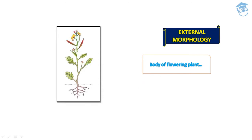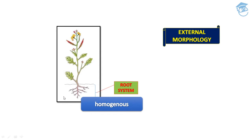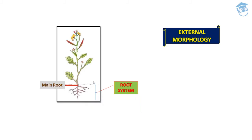This is the root system, which is homogeneous in nature — that means it has only roots, no flower, no fruit. That's why it is called homogeneous. Whereas the shoot system is called heterogeneous in nature. This is the main root or primary root. In the majority of dicot plants, the direct elongation of the radicle leads to the formation of the primary root.